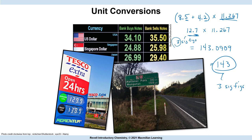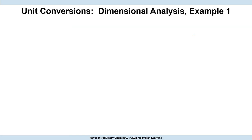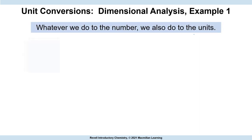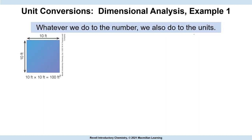We call these unit conversions, also called dimensional analysis or unit analysis. One thing to keep in mind: we always have to have our unit. We multiply the numbers, but we also have to multiply or divide our units. For example, calculating the area of a square: length times width, 10 times 10 is 100. We multiply our units as well, so this area is 100 feet squared.